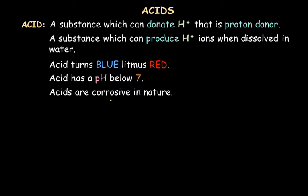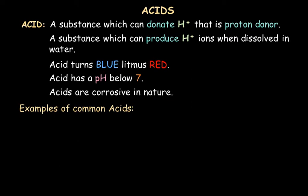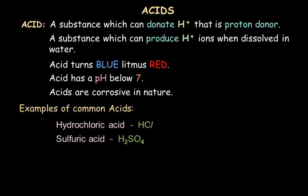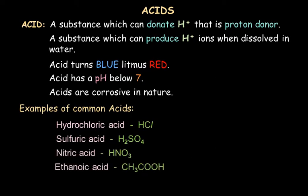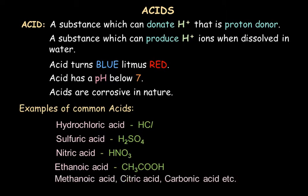Another characteristic of acids is that they are corrosive in nature, meaning they can be harmful to some surfaces, metals, or stone substances and can react with all of these to harm them. Some common examples of acids are hydrochloric acid HCl, which is very commonly used. Sulfuric acid H₂SO₄, which is also widely used. Nitric acid and ethanoic acid.